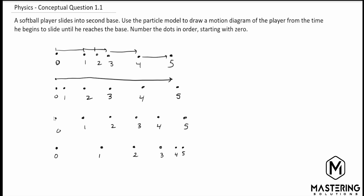This one here, if you look at all the dots, they're about the same distance all the way across. So this one is — if you can imagine — the softball player running consistently. They're not speeding up or slowing down; they're just running at the same speed the whole time between the bases.